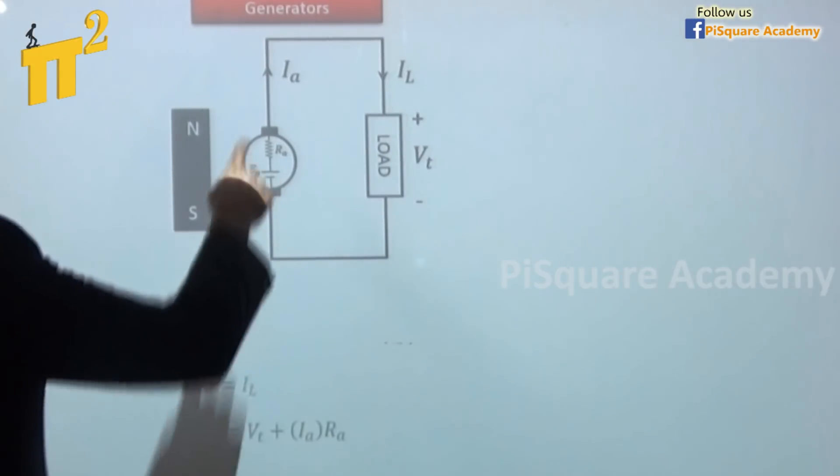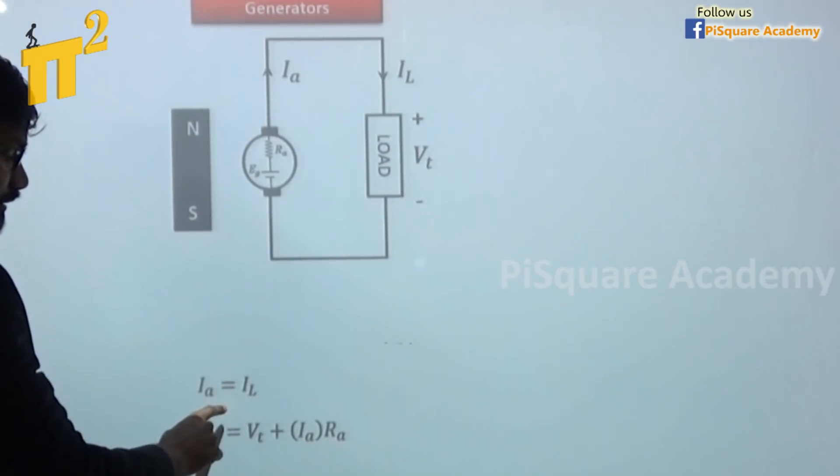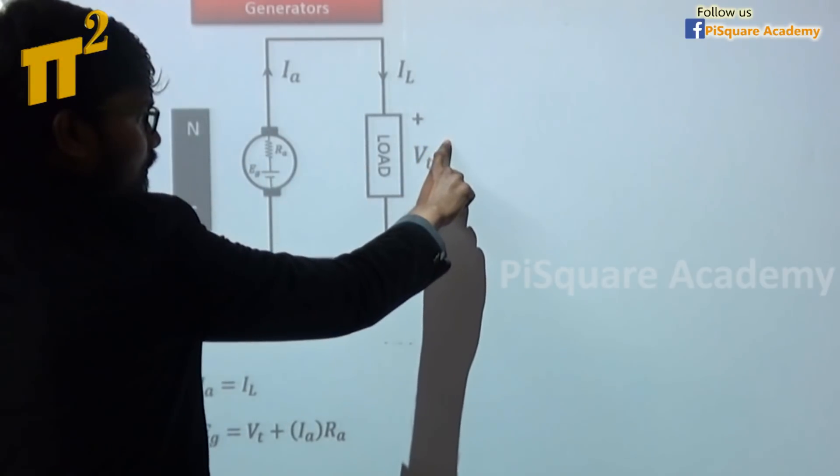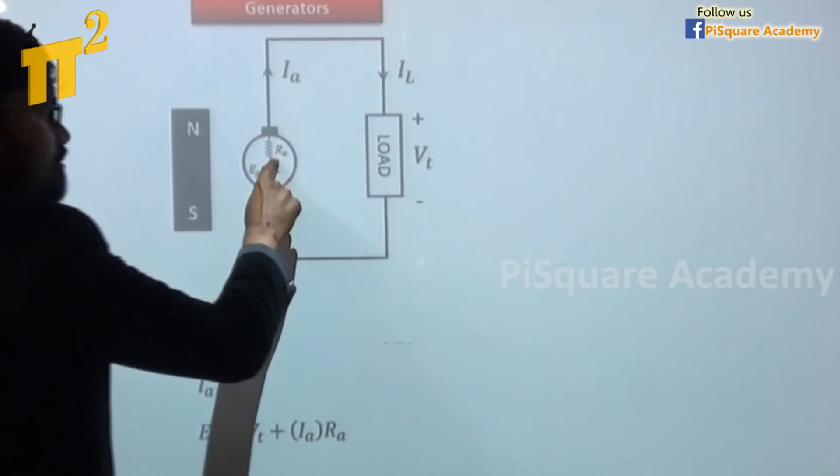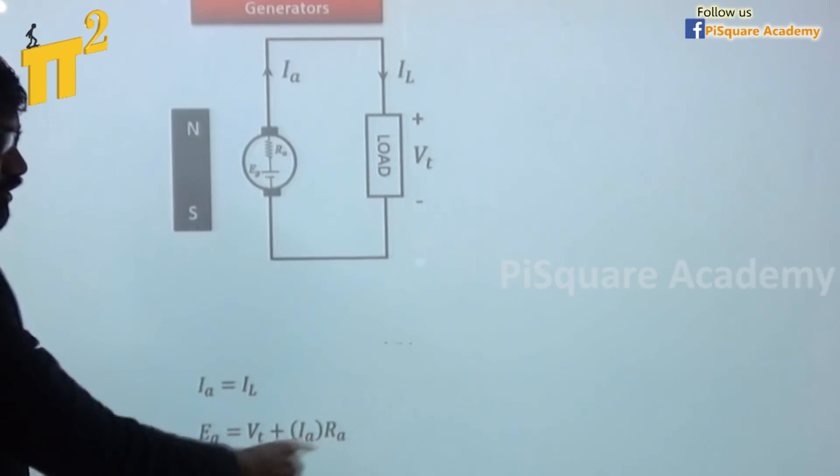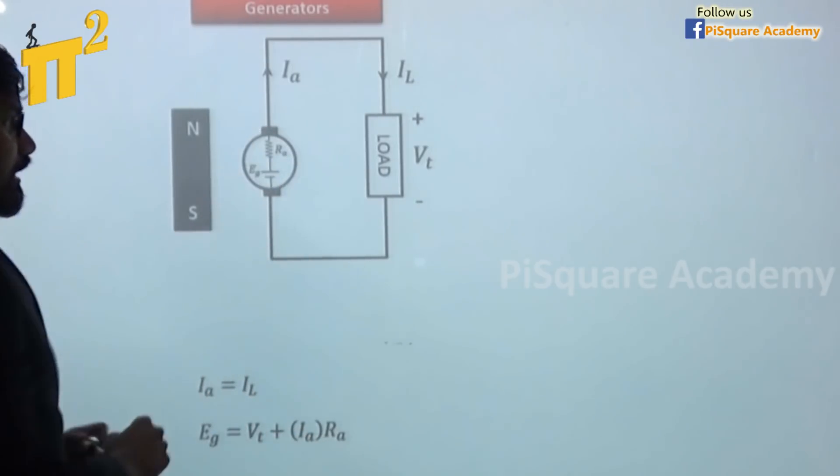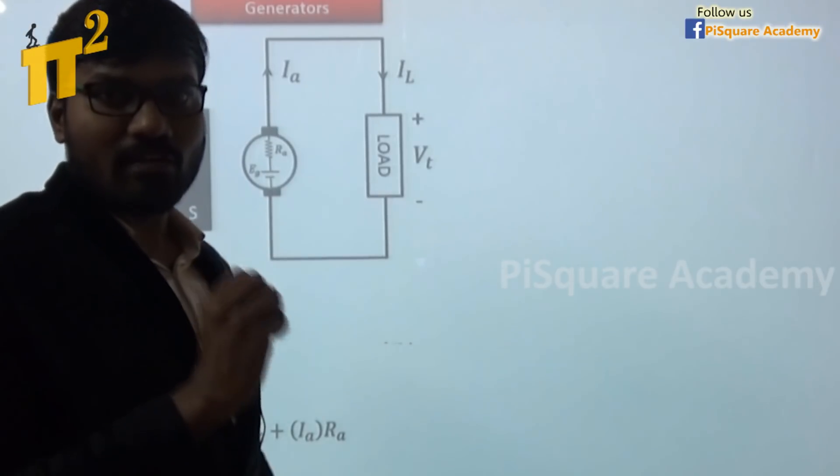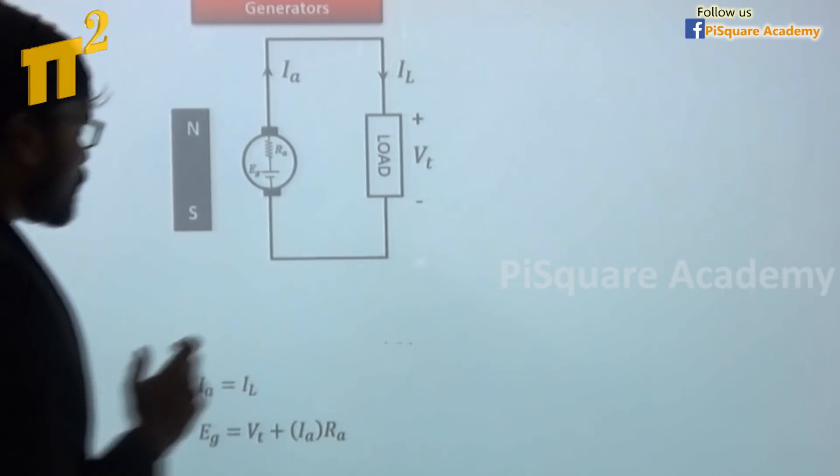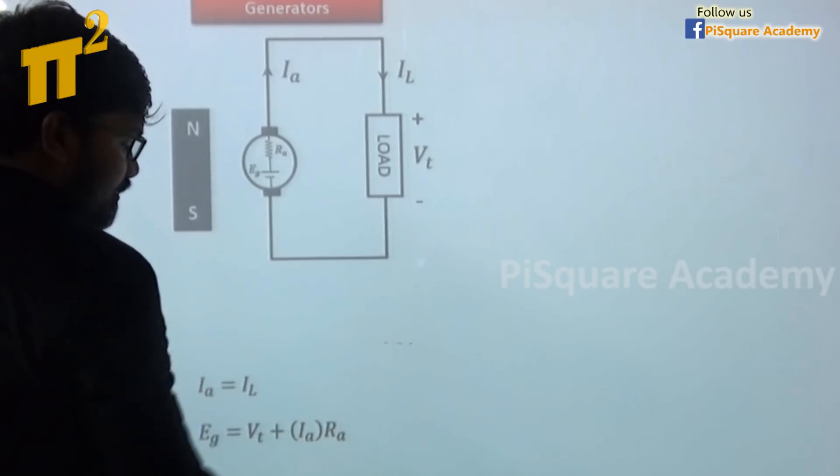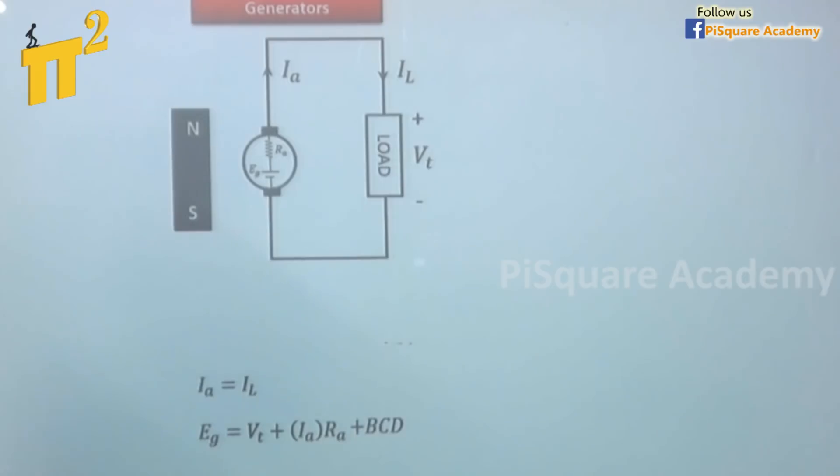The corresponding current and voltage equations - here Ia is equal to Il. Then Eg, whatever voltage generated here, will be supplied to the load after some drops. What is the drop here? Drop across the resistance, that's Ia*Ra drop. As we are having brushes, these brushes are made up of carbon, so they will carry some significant amount of resistance. So drop across these brushes is also added into this, that is called brush contact drop.